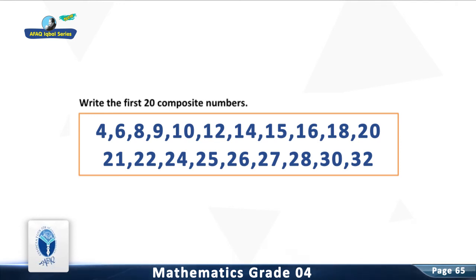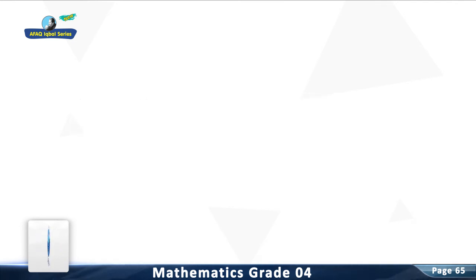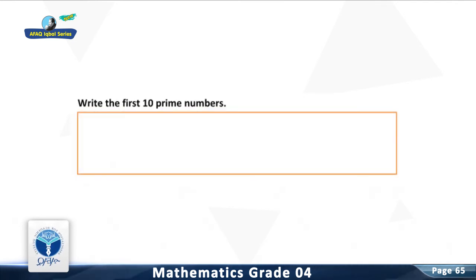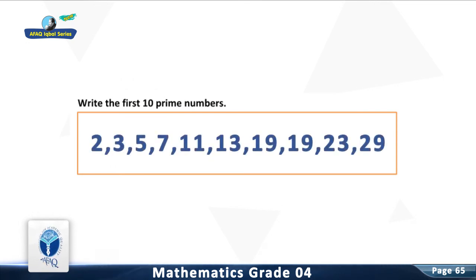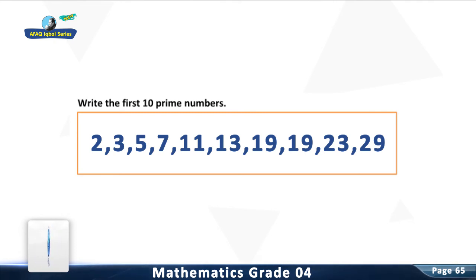The first 20 composite numbers continued: 22, 24, 25, 26, 27, 28, 30, 32. Question 2: Write the first 10 prime numbers. You are right. The first 10 prime numbers are: 2, 3, 5, 7, 11, 13, 17, 19, 23, 29.